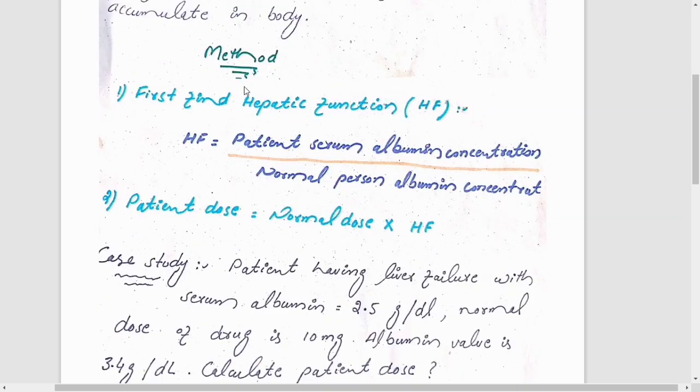So due to these reasons, we need to adjust the dose. A very simple method for dose adjustment: first, we will find the hepatic function, really known as HF, which is equal to patient serum albumin concentration. This we will get from the lab report divided by the normal person albumin concentration.